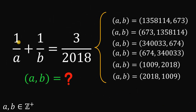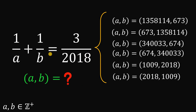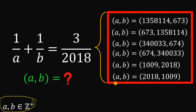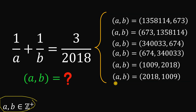Therefore, given the equation 1 over A plus 1 over B equals 3 over 2018, wherein A and B are both positive integers, we found 6 possible pairs of A comma B that satisfy this equation. And as always, we are done.